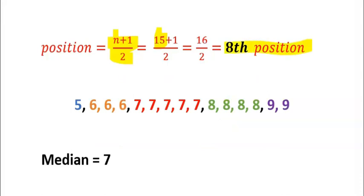To find the median, count the rearranged numbers from the left. The first position is here, this is the second, third, fourth, fifth, sixth, seventh, and this is the eighth position, which is 7. Seven becomes our median.